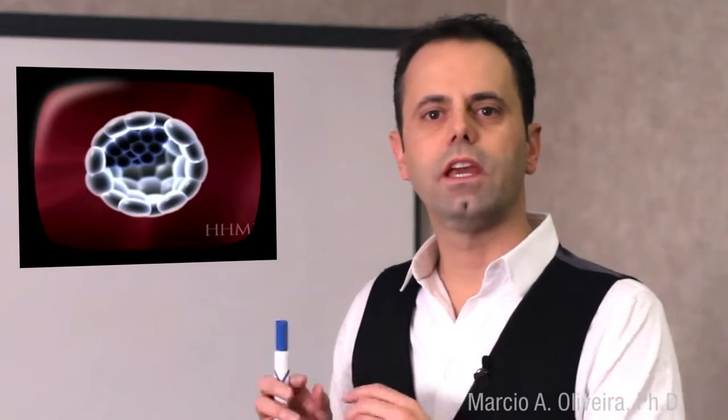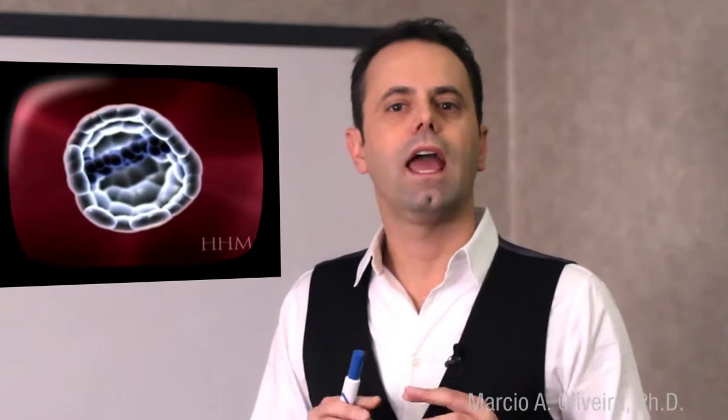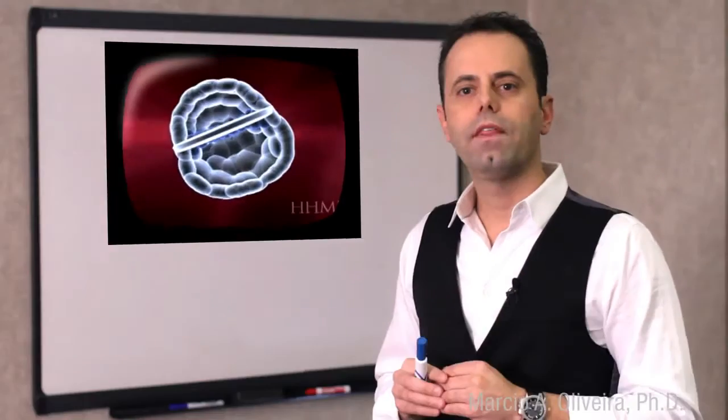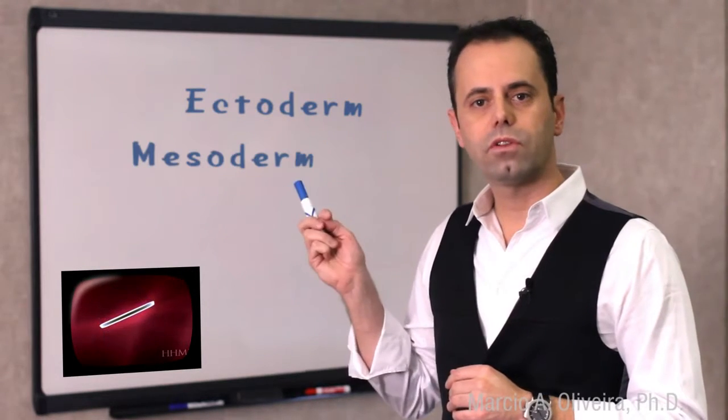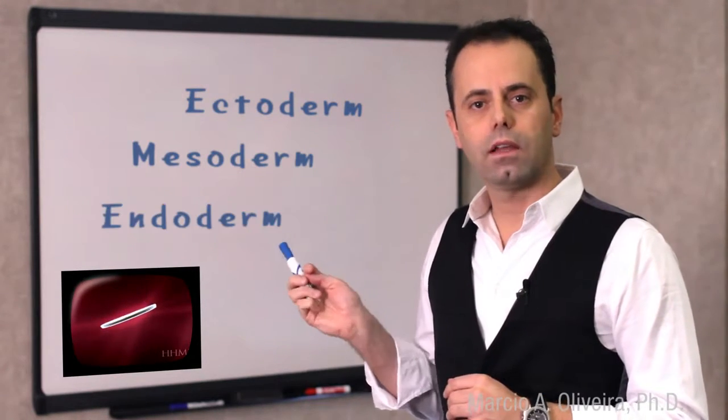The embryonic period occurs from 2 to 8 weeks after conception. During the embryonic period, the rate of cell differentiation intensifies. As seen in the video, cells start to migrate in and out, and three beginning layers of the embryo start to be formed: the ectoderm, the mesoderm, and the endoderm.